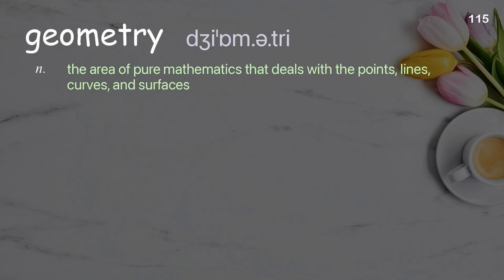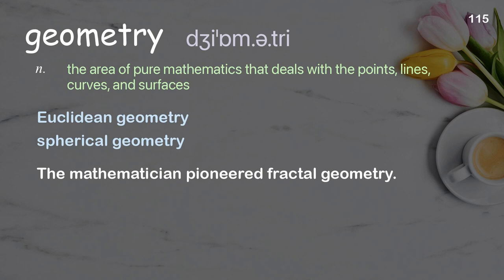Geometry: the area of pure mathematics that deals with points, lines, curves, and surfaces. Examples: Euclidean geometry; spherical geometry. The mathematician pioneered fractal geometry.